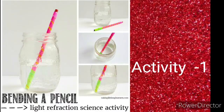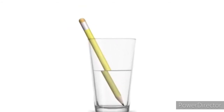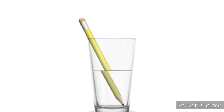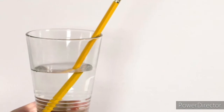Now let us move on to Activity 1. Take some water in a glass tumbler and keep a pencil in it. Look at the pencil from one side of the glass and also from the top of the glass. Children, do you find any difference between the two views? Yes, there is a difference between the two views.